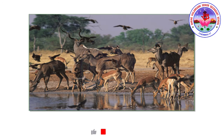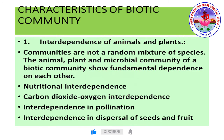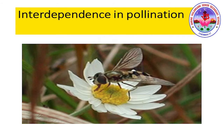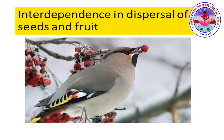Now we're going to study the characteristics of a biotic community. The first characteristic is interdependence. Animal and plant communities are not a random mixture of species; they show fundamental dependence on each other. This includes nutritional interdependence, carbon dioxide-to-oxygen interdependence through respiration, interdependence in pollination — such as insect pollination (entomophilous) — and interdependence in the dispersal of seeds and fruits, as shown by birds.